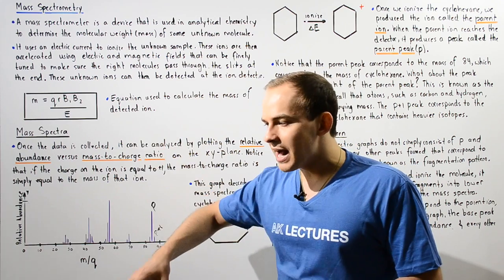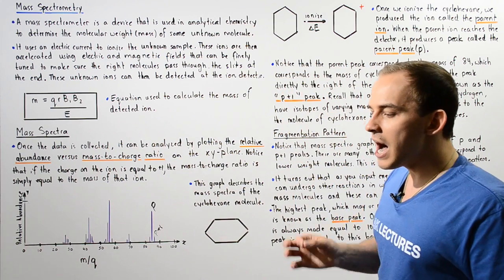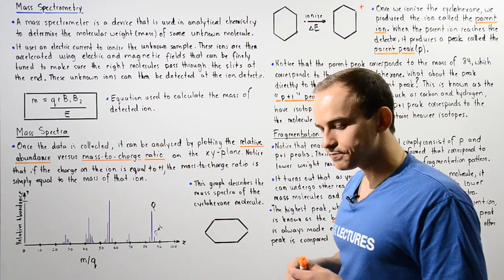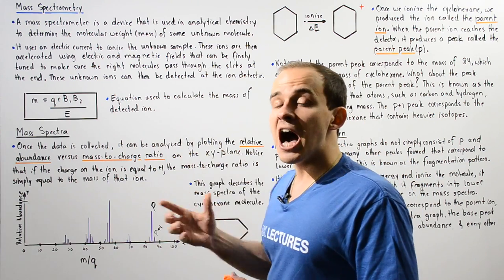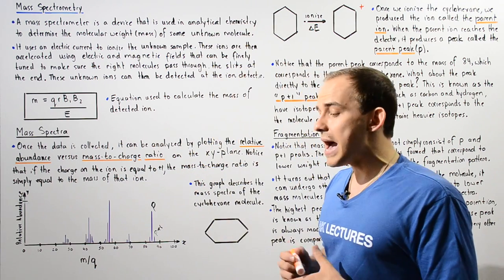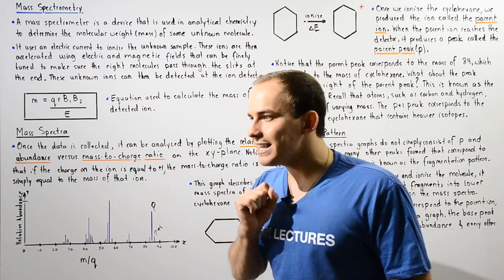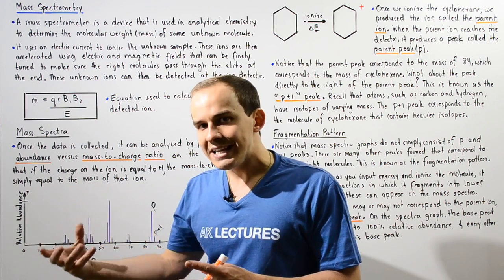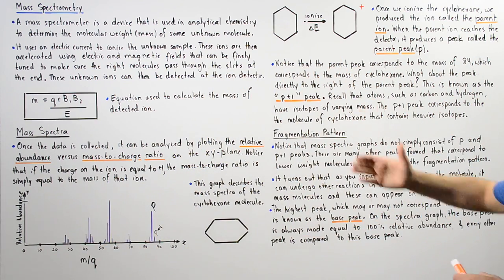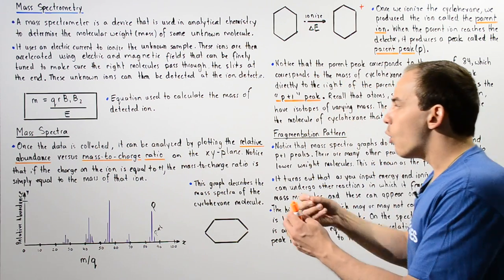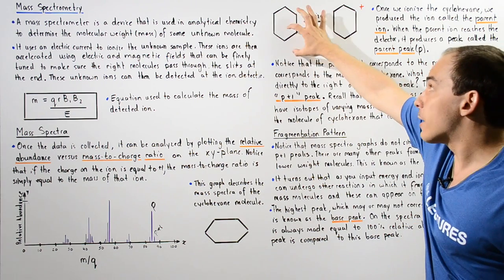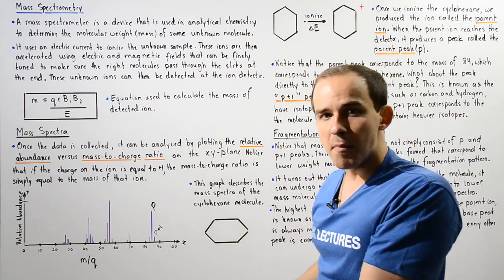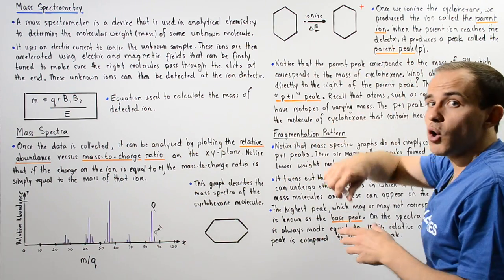Initially we place the cyclohexane inside, flip a switch that creates a high voltage difference, and allow two electrons to travel at high velocities — creating an electric current. These high-energy electrons carry a great amount of kinetic energy, and when they collide with the electrons of the molecule, they eject those electrons by giving them enough energy to overcome the electrostatic forces. Once those electrons are ejected, the molecule is ionized into an ion. The original molecule is known as the parent molecule, and the resulting ion is known as the parent ion.